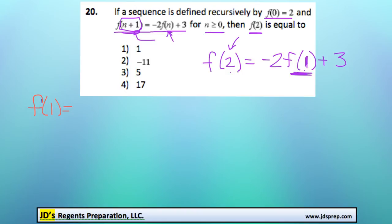So f(1) is going to become -2 times f(0). And again, that's because it's always going to be 1 less than this number. Plus 3. And here's where this part comes in handy. We know that f(0) is equal to 2. So this becomes -2 times 2 plus 3. And that's because we're just replacing f(0) with the number 2. And then we'll get -4 plus 3, which is -1.